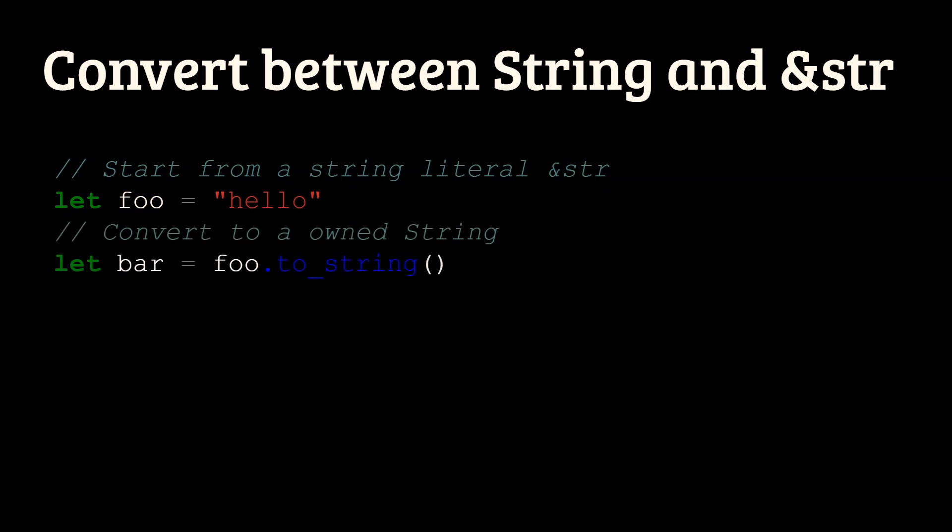Now that you know the basics, let me give you a couple of tips. You can easily convert between the two using the toString and the borrow operation, such as, in this case, we have a string literal, foo. We convert it to an owned string, so in this case, we are allocating some memory on the heap, and then we get back a string slice by using the borrow operator, the AND symbol.